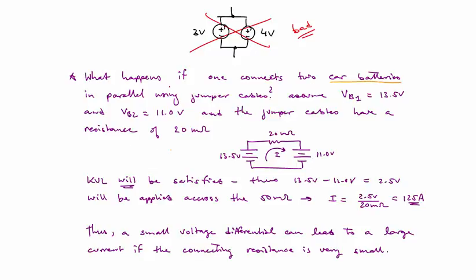So if we assume one battery is at 13.5 volts and the other one is not so charged, it's 11 volts. And if the cables that connect those batteries have some amount of resistance, 20 milliohms, let's say,